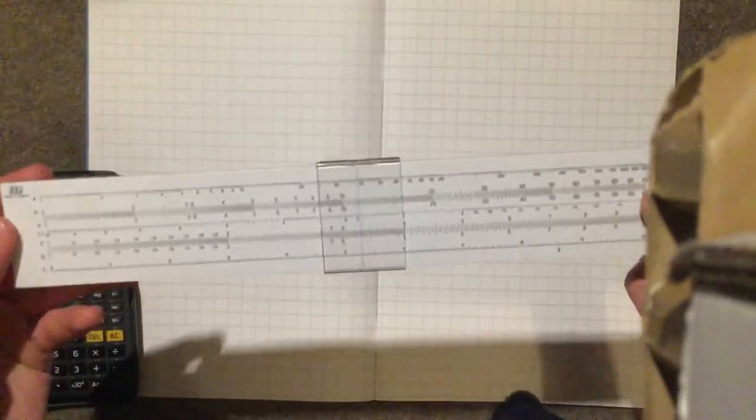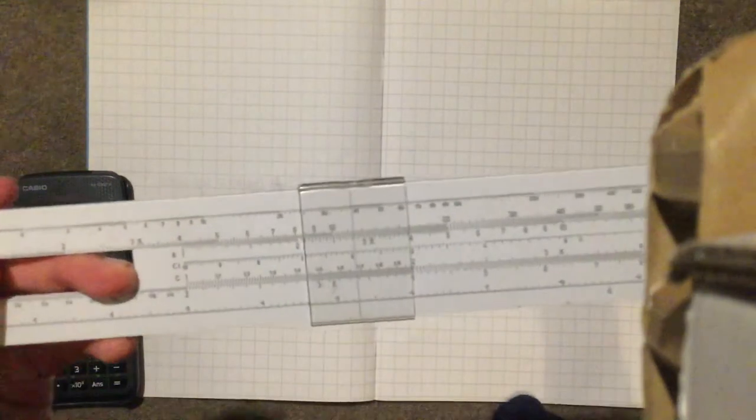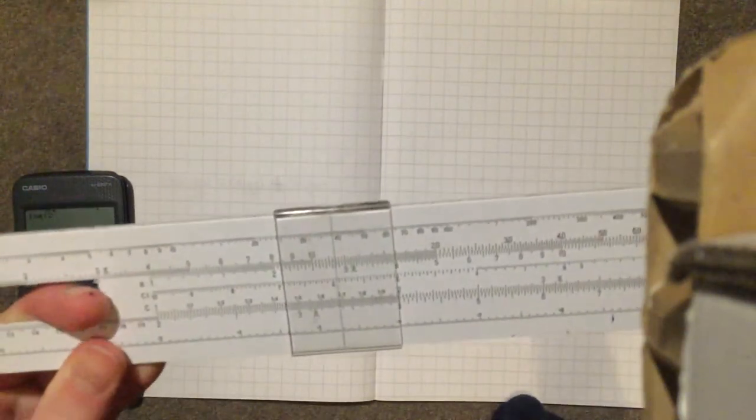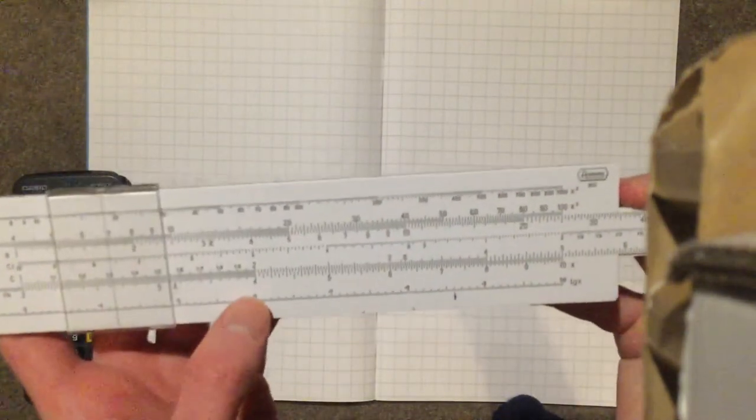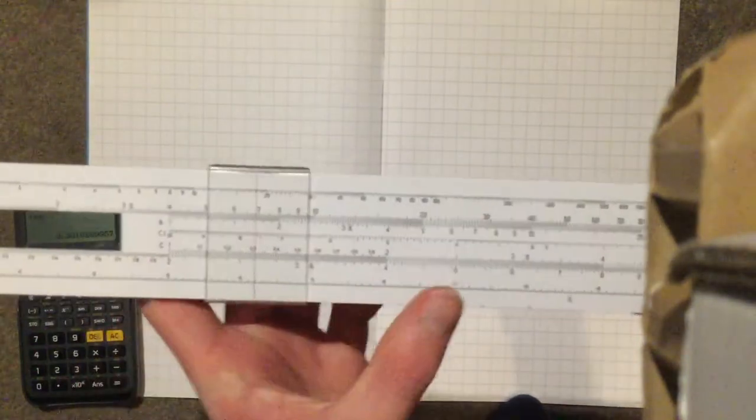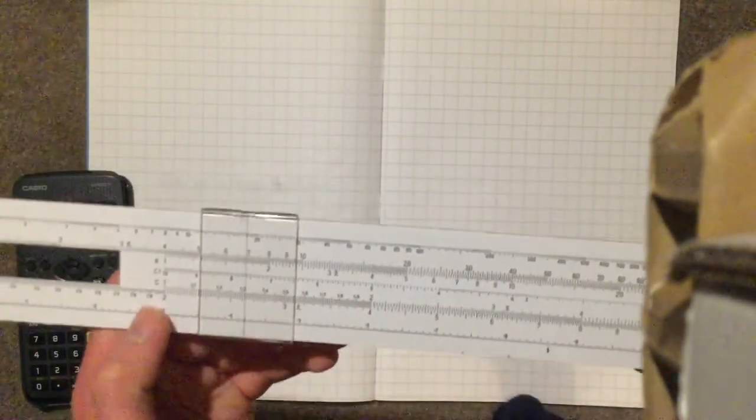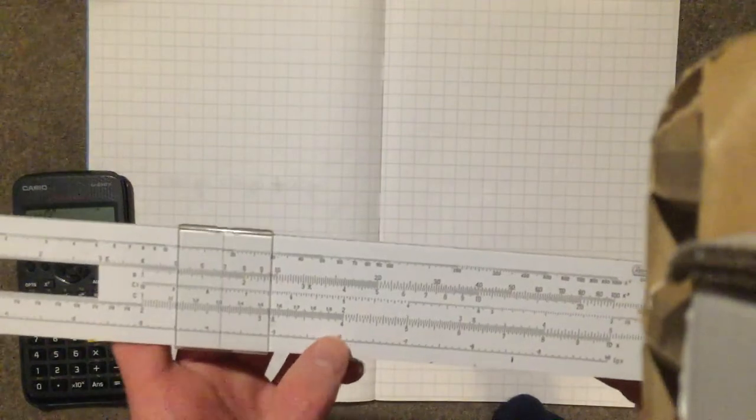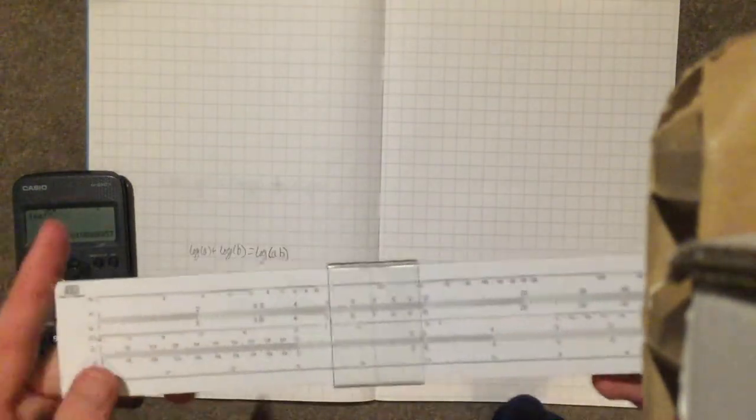When multiplying 2 by 2, we go a distance of 2 along the bottom scale, and a distance of 2 along the top. So we're adding the log of 2 plus the log of 2, and that's equal to the log of 2 times 2, the log of 4. Great!